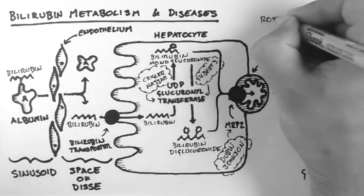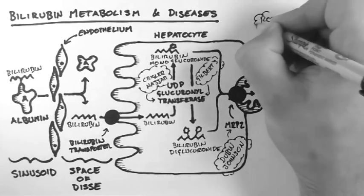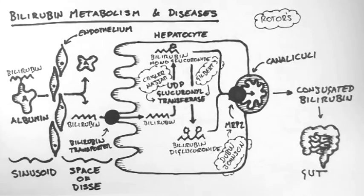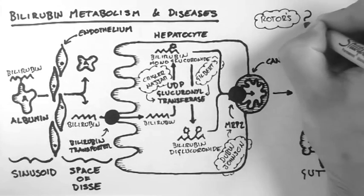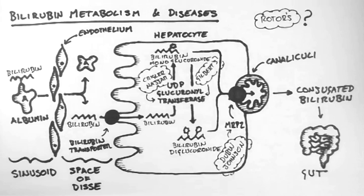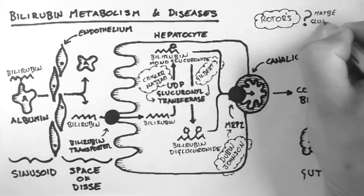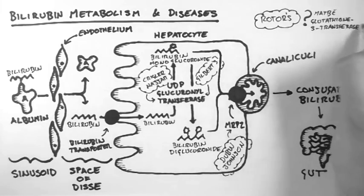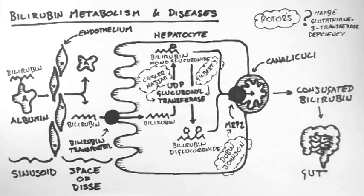The last disease is called Rotor's syndrome. This disease is a bit of a mystery. It seems similar to Dubin-Johnson syndrome and causes an increase in conjugated bilirubin in the blood, but a cause for this disease has not been determined. A glutathione S-transferase deficiency has been suggested, as this is a transporter of bilirubin within the hepatocyte, but for now the cause is unknown. And that's an overview of bilirubin metabolism and the associated diseases.